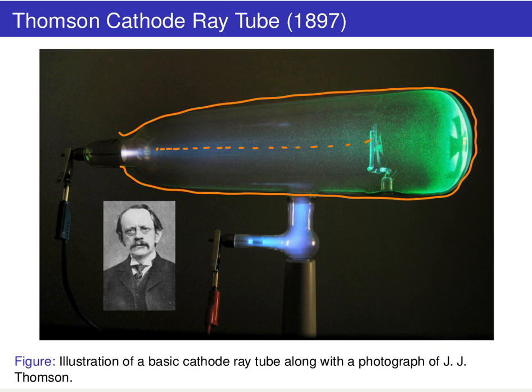Those of you who might remember old-fashioned TV screens — cathode ray tubes were the key technological component of old TVs. If you had a big TV you could barely lift off the table, that relied on this technology.